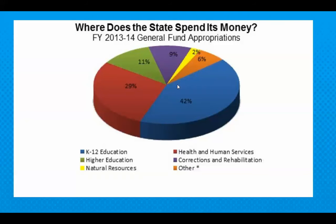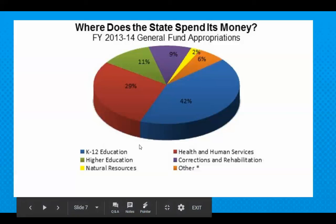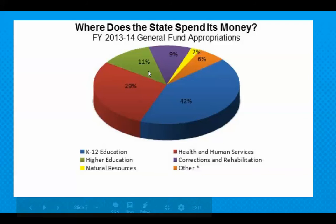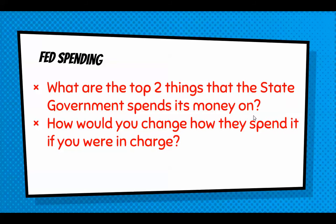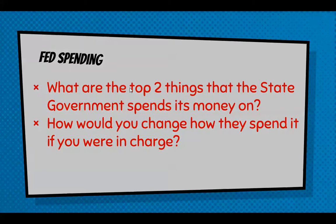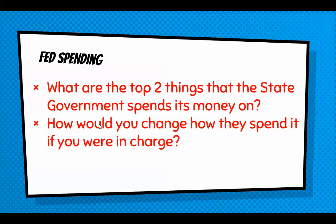Here's how the state spends its money — quite a bit different than the federal government. A lot of it goes to education: K-12, kindergarten through senior year, and higher education for community colleges. There's also natural resources, health and human services, and corrections and rehabilitation — that's for the jails. Same question but about the state: what are the top things the state spends on, and how would you change it?